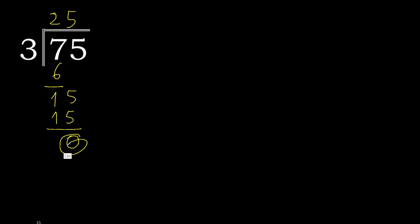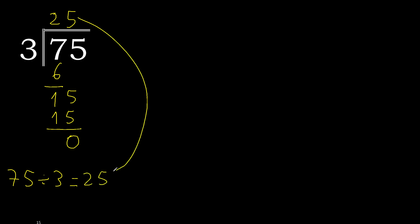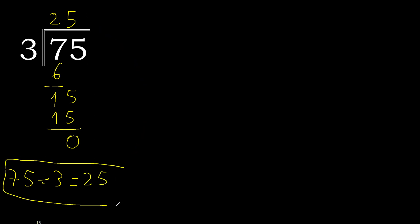The remainder is 0. So, 75 divided by 3 is 25. Finish.